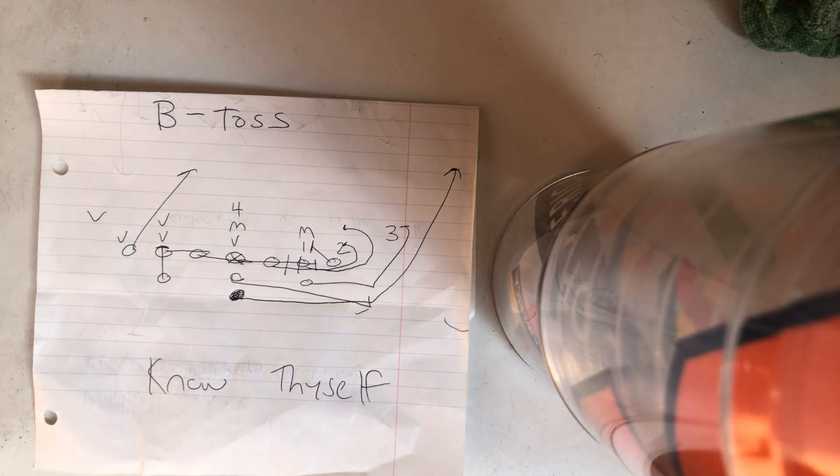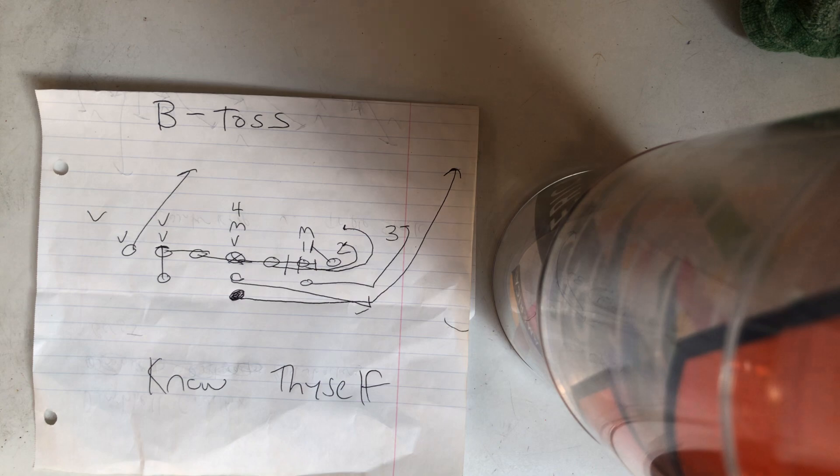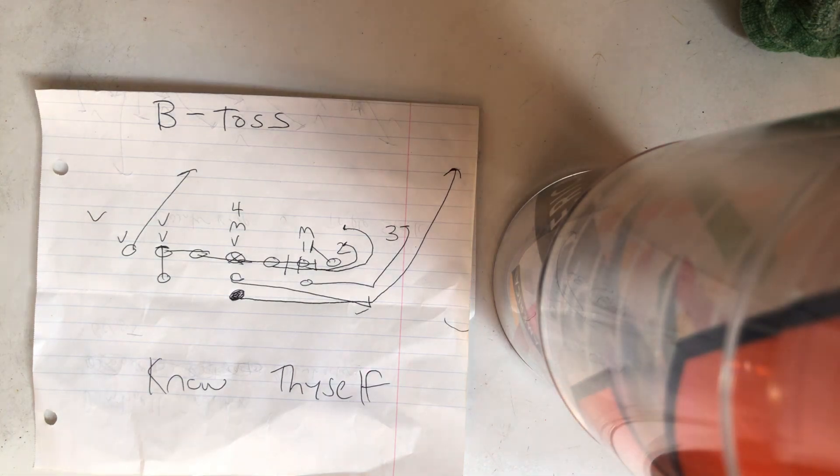So I get that, I understand that. If you're going to do it, you got to run the B-back toss. You got to run not just the rocket toss, but the B-back toss. So you have two ways to get the ball outside in Army. So you're going to install the B-back toss. How do you run the B-back toss?